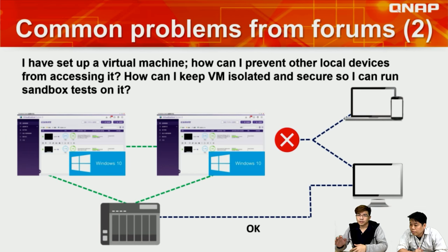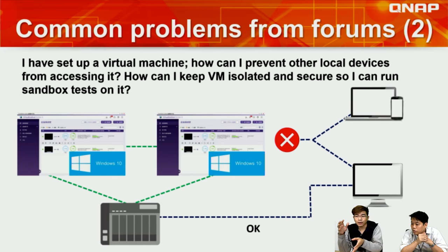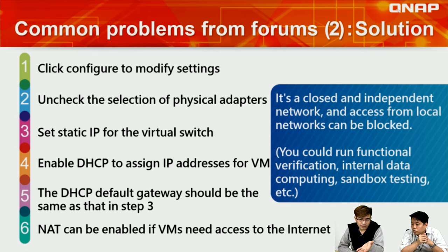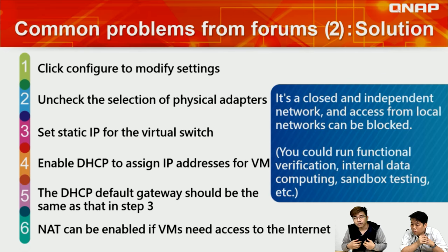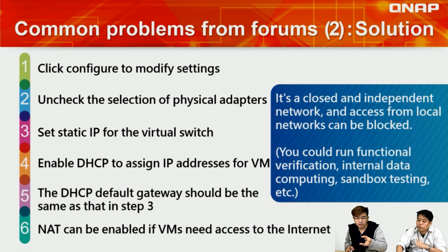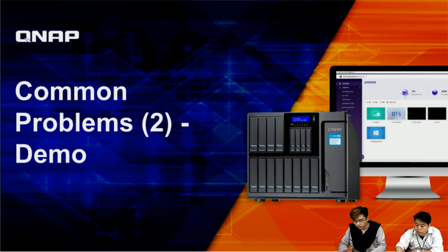That was the first demo — how to let other devices access a VM. Here is the second, opposite problem: if you have a virtual machine running a sandbox test, how can you prevent other local devices from accessing it? The solution: go into Modify Settings, uncheck the physical adapters, set a static IP for your virtual switch, enable DHCP so it assigns IP addresses to your VMs, and set the default gateway to match the virtual switch's static IP.